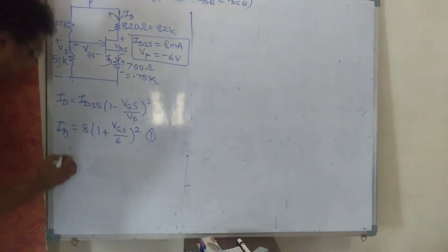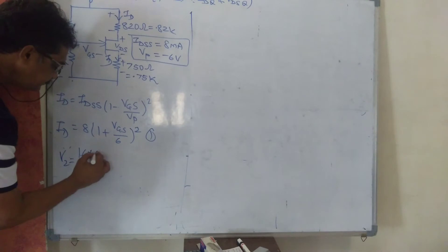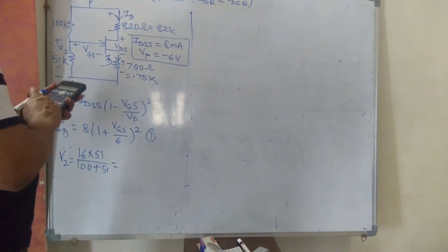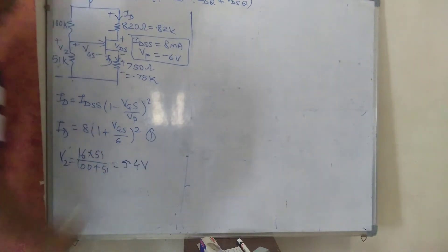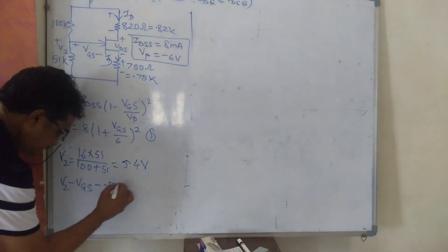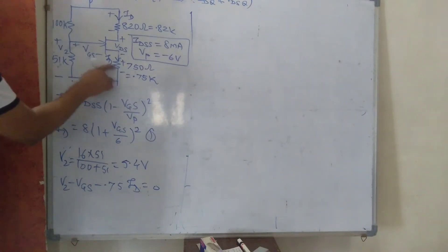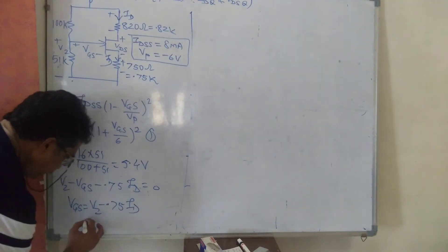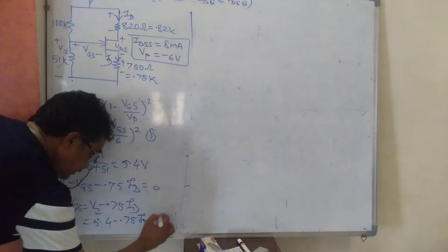Now I am calculating V2: V2 = (60 × 51) / (100 + 51) = 5.1 approximately. Applying KVL to the gate-source loop: V2 − VGS − 0.75·ID = 0, so VGS = V2 − 0.75·ID. With V2 = 5.1, this is equation number 2.